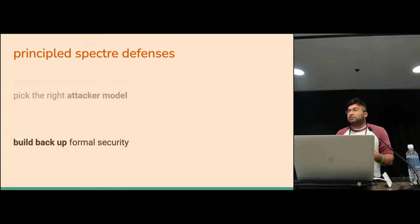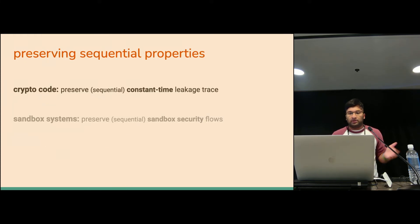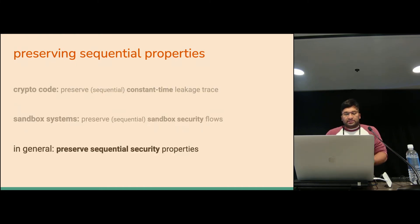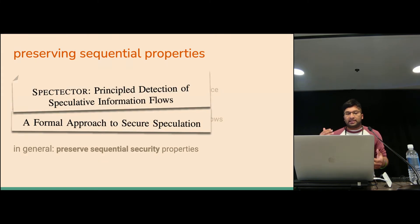Once you have the right attacker model for your domain, you can start recovering these security properties that were originally lost. Like we saw with crypto code, we're taking a sequential idea and moving it to speculation. With sandboxing, the same thing. We'd like to think that in general, we should be able to take these sequential security properties and translate them in the same way to speculative execution. And that's exactly the kind of tack that tools like Spectector and Fast take.